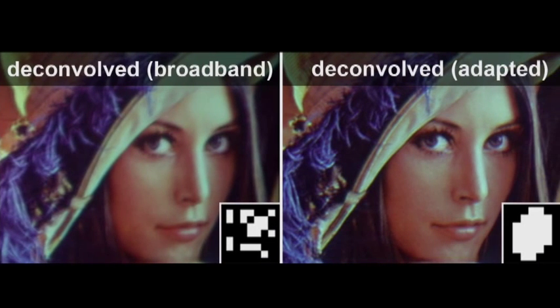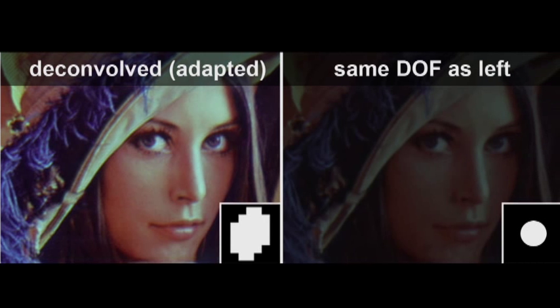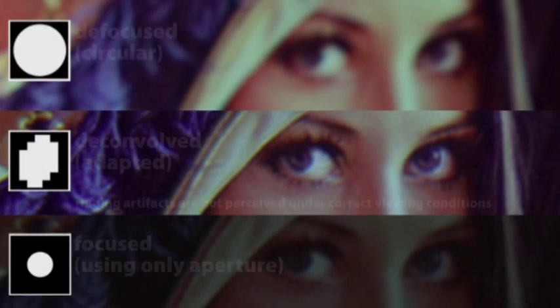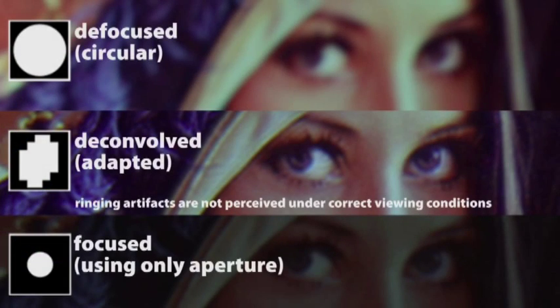To reach the same depth of field that is achieved with the adaptive coded aperture for this example with an equivalent circular aperture, an f-stop of 7.7 is needed. In terms of light throughput, the gain is theoretically a factor of 6. But due to the limited contrast of the liquid crystal array, it is approximately a factor of 2.5.